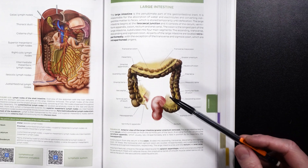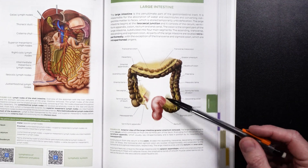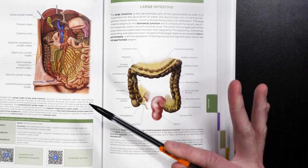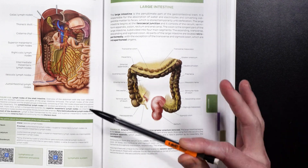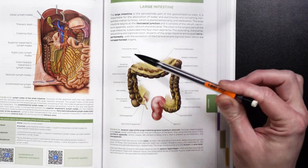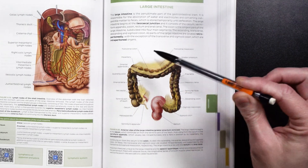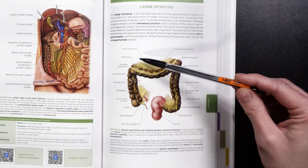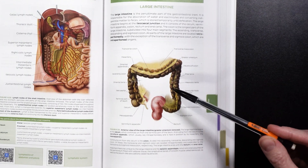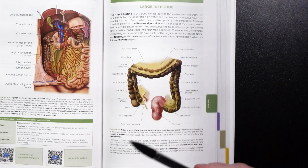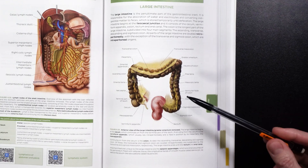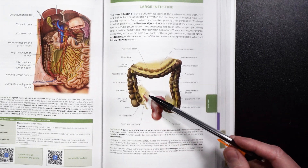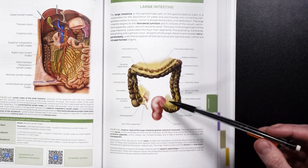Oftentimes you'll hear these being spoken of interchangeably, but that is technically inaccurate. The overall goal and job of the large intestine is to absorb water and electrolytes from the material that wasn't able to be digested in the small intestine.